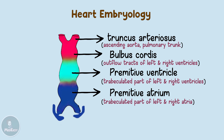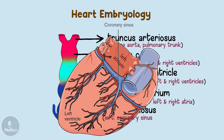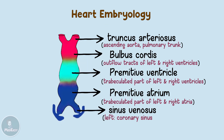Then we have the sinus venosus, which has two horns. The left horn will give rise to the coronary sinus. This is easy to remember since the coronary sinus is situated in the left posterior aspect of the heart, and the right horn of the sinus venosus will give rise to the smooth part of the right atrium.